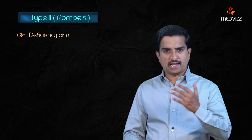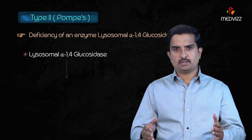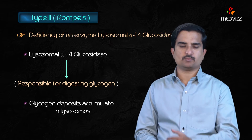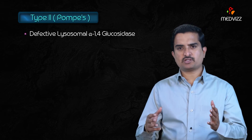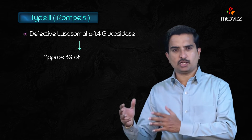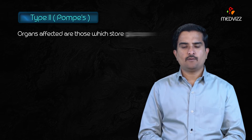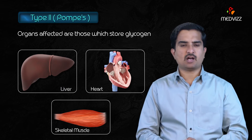Type 2, Pompe's disease, involves a defect in lysosomal alpha-1,4-glucosidase enzyme, which is responsible for digesting glycogen; glycogen deposits accumulate in lysosomes. This enzyme accounts for only approximately 3% of glycogenolysis, so the defect does not cause hypoglycemia. The organs most affected are those that store glycogen, such as the liver, heart, and skeletal muscle.